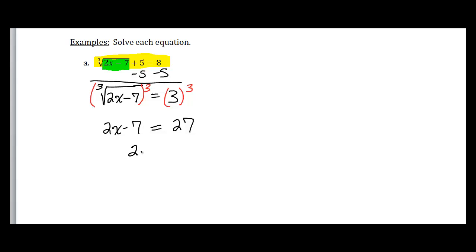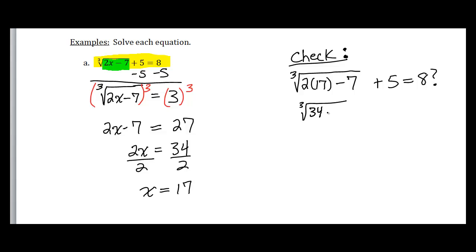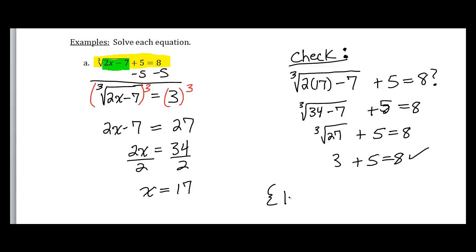To solve for x, I add 7 to both sides to get 34, then divide both sides by 2, giving x equals 17. Now I check that solution by substituting 17 back into the original equation: cube root of (2 times 17 minus 7) plus 5. That's the cube root of 27 plus 5, which is 3 plus 5, which equals 8. That's true, so my solution is x equals 17. Had it been false, there would be no solution.